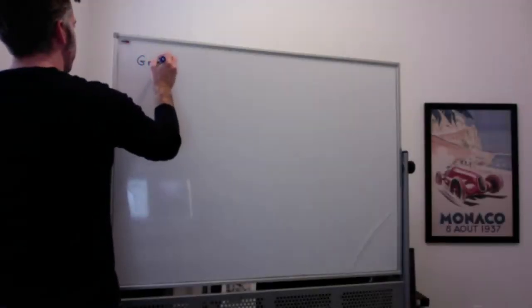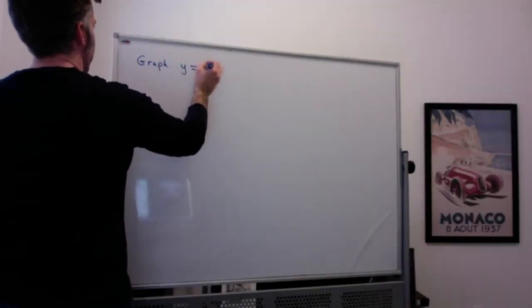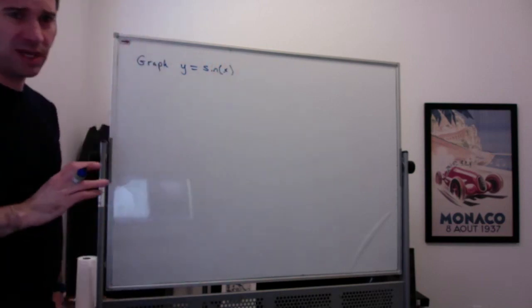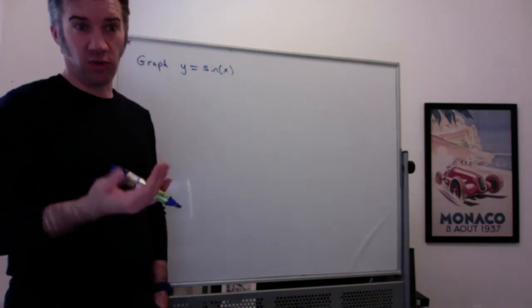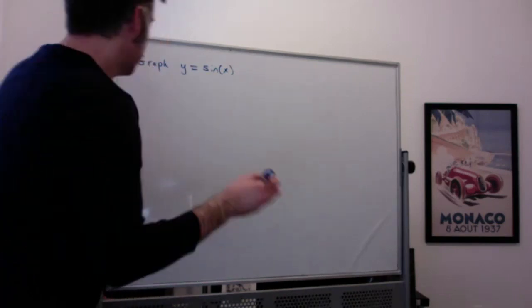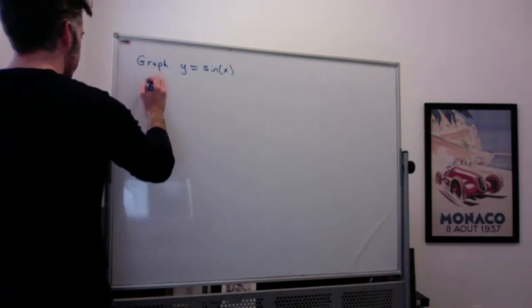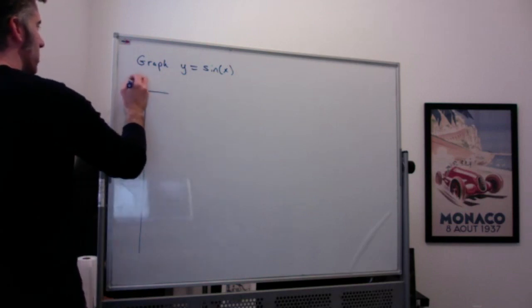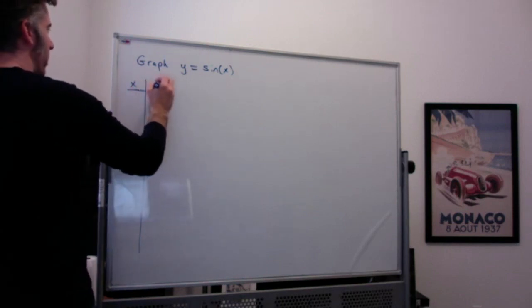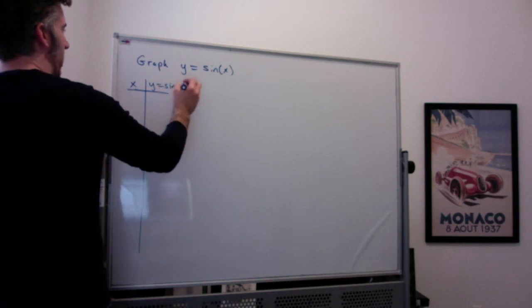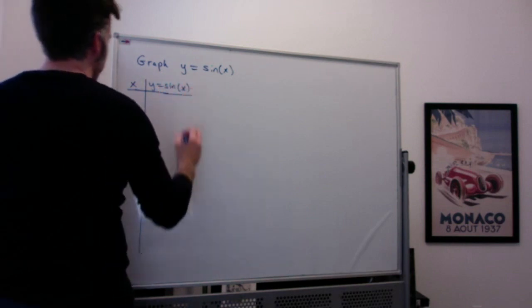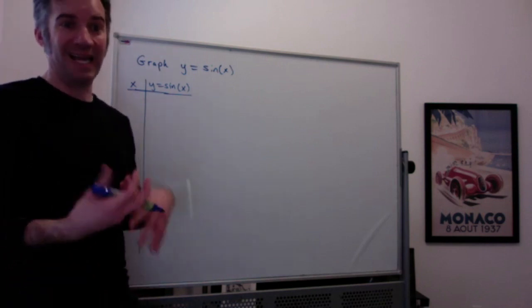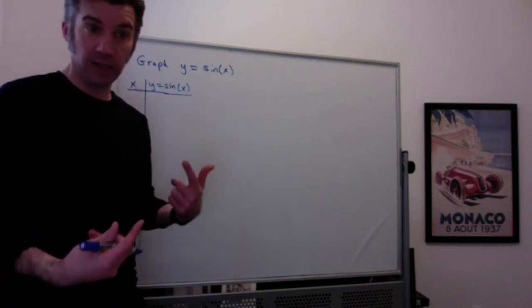I want to graph y equal to sine of x. We're going to do this the long way, and then we'll talk about the shorter way to do it for cosine. I'm going to make a whole table of x and y values — x values and y values, where y is sine of x. The x values I'm going to pick are the usual nice angle values in radians.